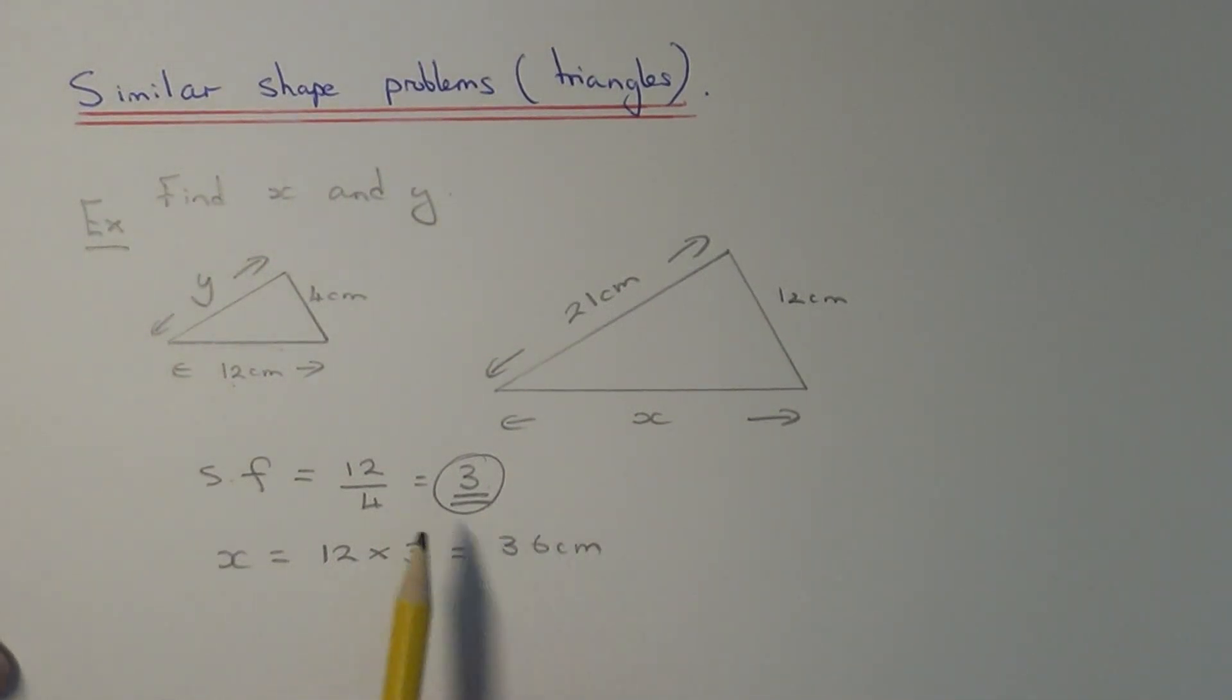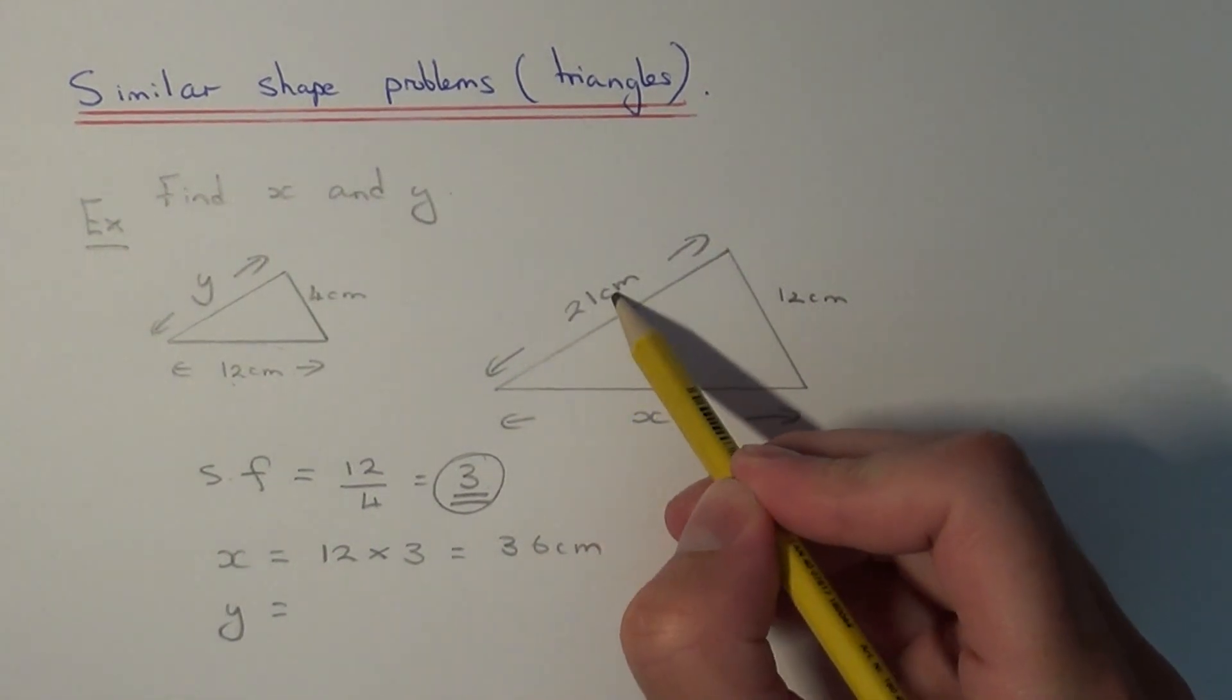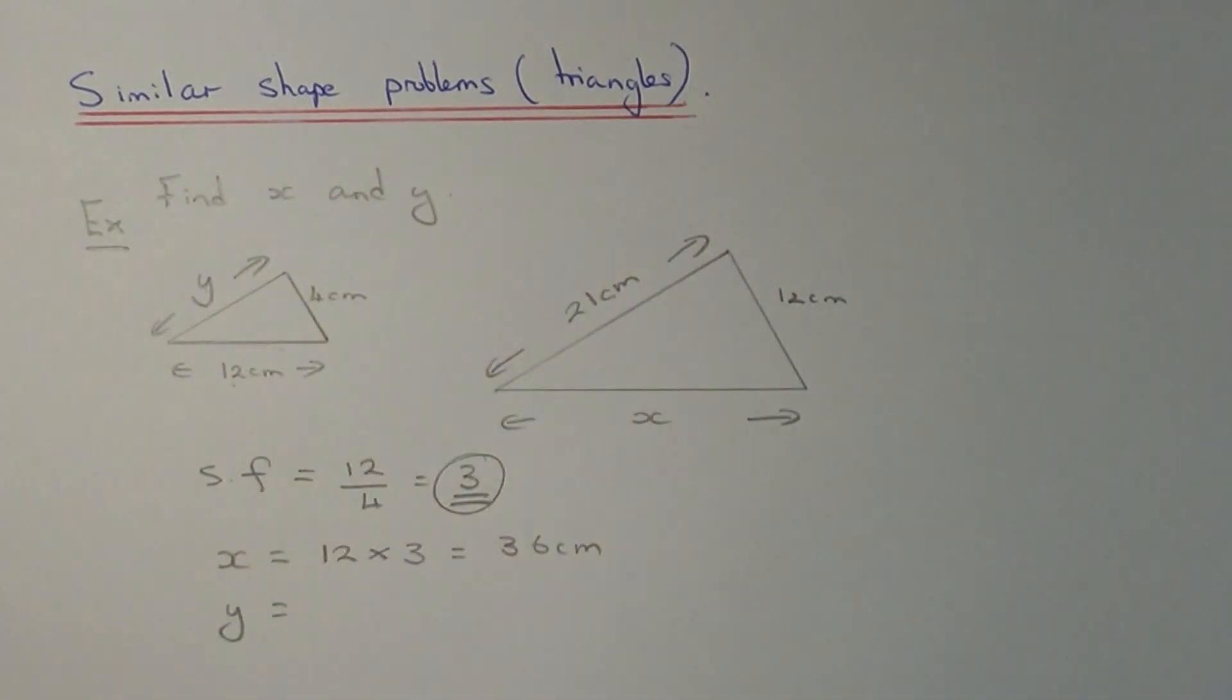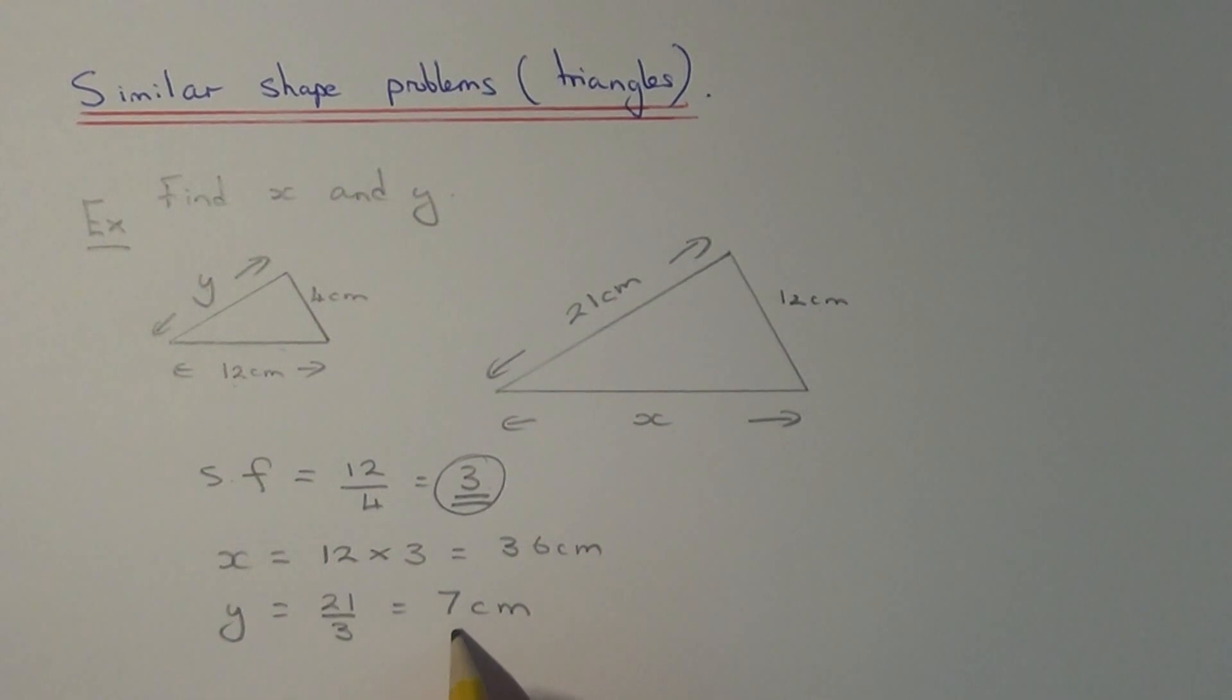And finally then let's work out side length y. So this time it's on the smaller triangle so we need to divide this time. So if we divide 21 by 3 that will give us y, and that gives us an answer of 7 centimeters.